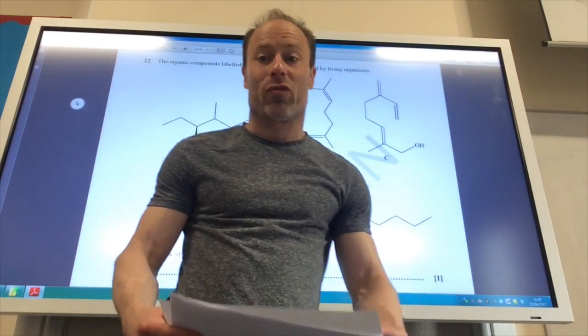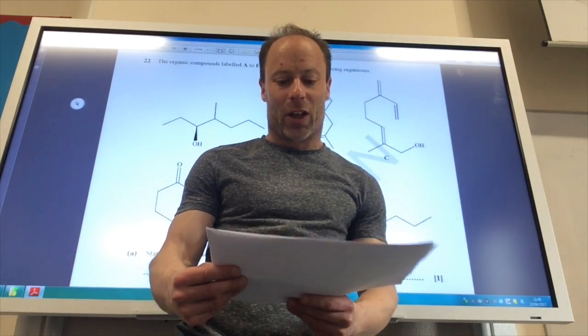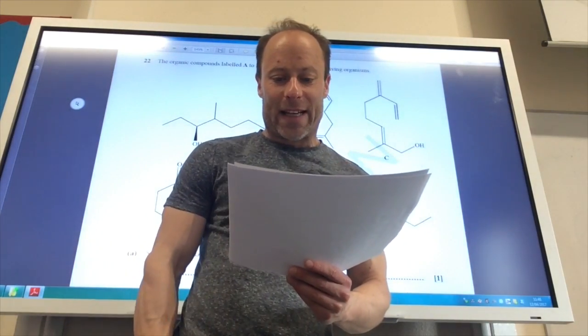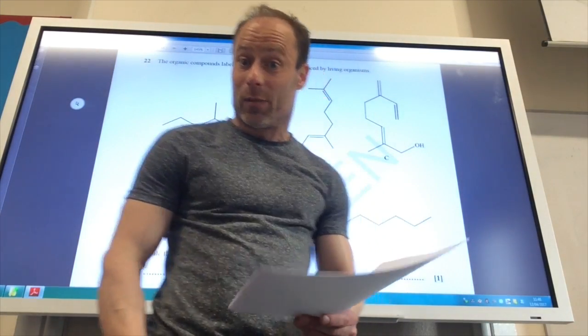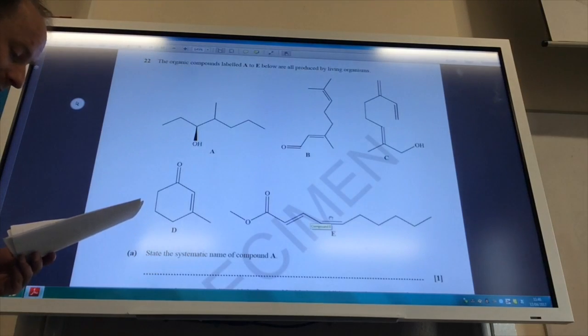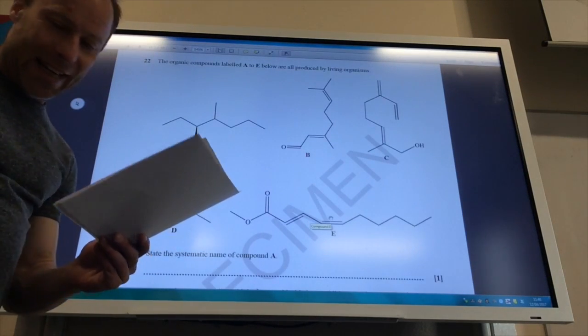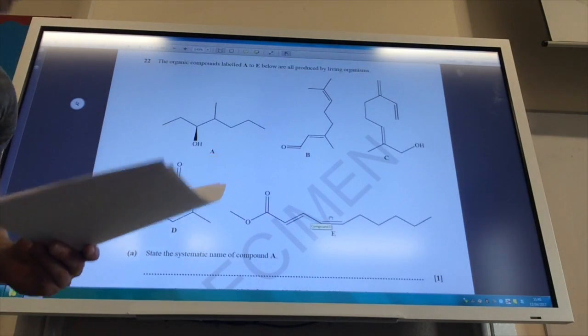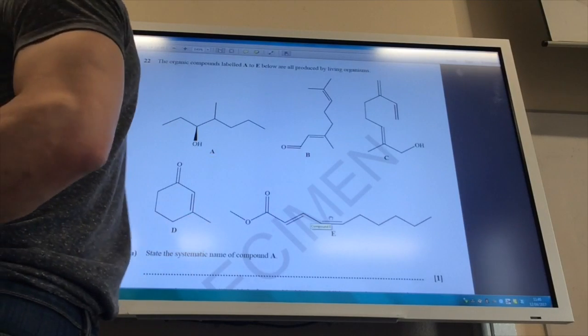Right, so on to some organic chemistry now. The organic compounds labelled A to E are all produced by living organisms. Give the systematic name of A. Okay, so here we go. What have we got for A?